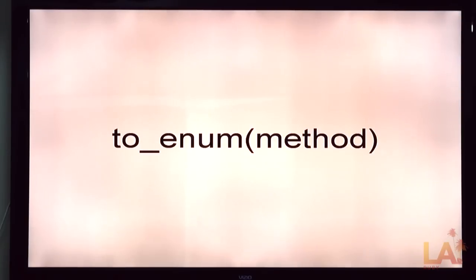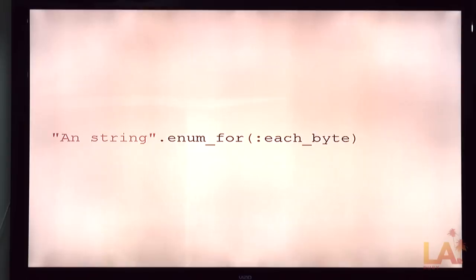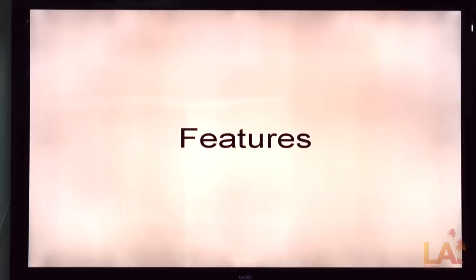So you can say to enum and a method, and you'll get an enumerable of calling that method repeatedly on the object. So you kind of want that method to be something that's iterable, that returns an iteration. I'm actually not sure what will happen if you pass a method that doesn't take a block.